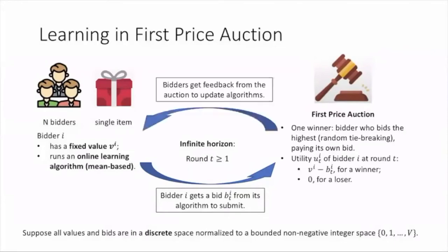All bidders get feedback from this round of auction to update their algorithms. Note that we don't assume a specific feedback model, just a mean-based property of the learning algorithm. After updating, the bidder may change its bidding strategy in the next round. Our question is, whether their bidding strategy will eventually converge to a Nash equilibrium of the one-shot first price auction?